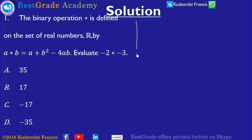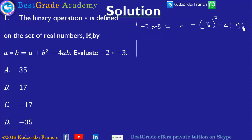We are evaluating negative 2 star negative 3. Negative 2 star negative 3 is equal to negative 2 plus negative 3 squared, minus 4 times negative 2 times negative 3. This gives us negative 2 plus 9, then minus 4 times 2 times 3, which is 24, so minus 24.